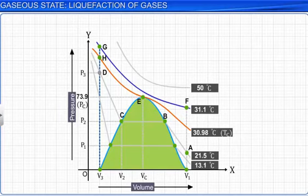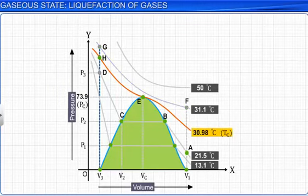For example, carbon dioxide gas below its critical temperature at 30.98 degrees Celsius is called carbon dioxide vapor.